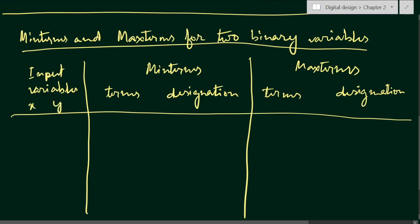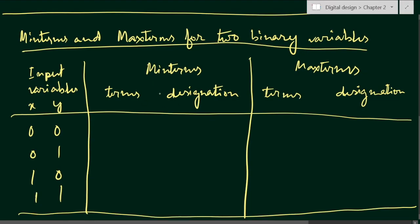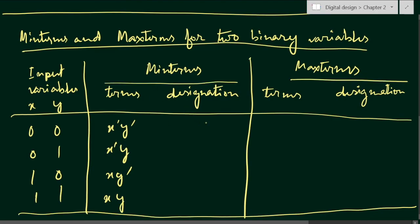The input variables are x and y, so we can have four combinations: 00, 01, 10, 11. For 00, both are complemented, so the minterm is x bar y bar. For 01, the minterm is x bar y. For 10, it is x y bar. For 11, it is x y. These minterm terms are designated with small m: m0, m1, m2, and m3.